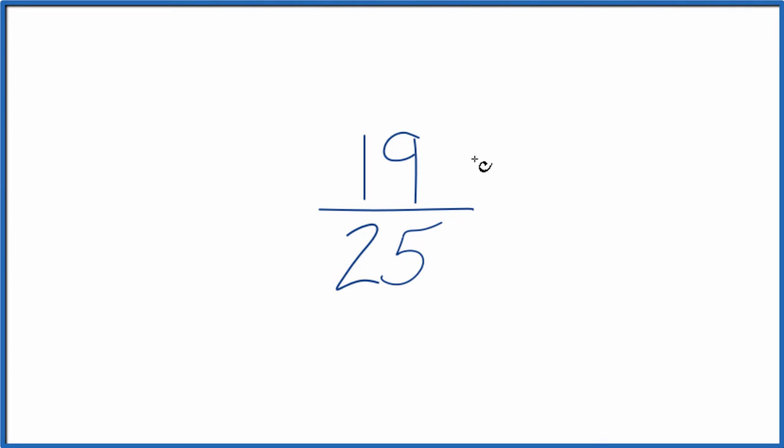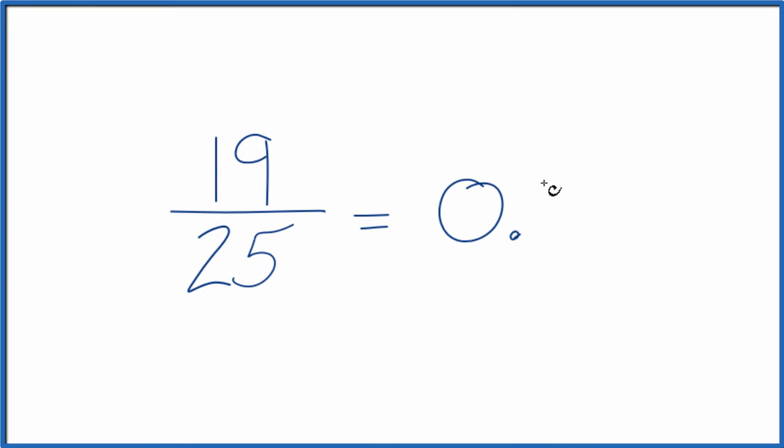First off, we could just divide 19 by 25 on our calculator. We end up with 0.76.